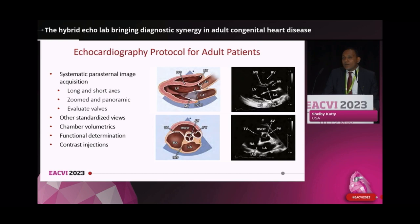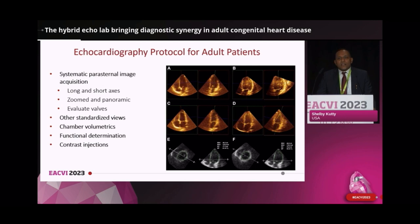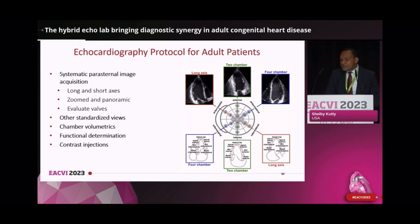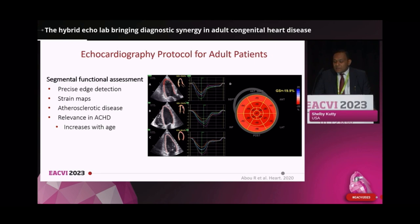Adult protocols are not limited to apical views, but also include parasternal long and short axis images, and these standardized views are recorded in a consistent fashion to complete a full assessment of valves and myocardial function. Sonographers have a highly disciplined routine to optimize the images for measurement and to assure that the functional assessments and chamber volumetrics are accurate. Other labs are prepared to use contrast injections that are often necessary for border detection. Strain mapping provides a means to detect segmental myocardial dysfunction commonly encountered in atherosclerotic heart disease.